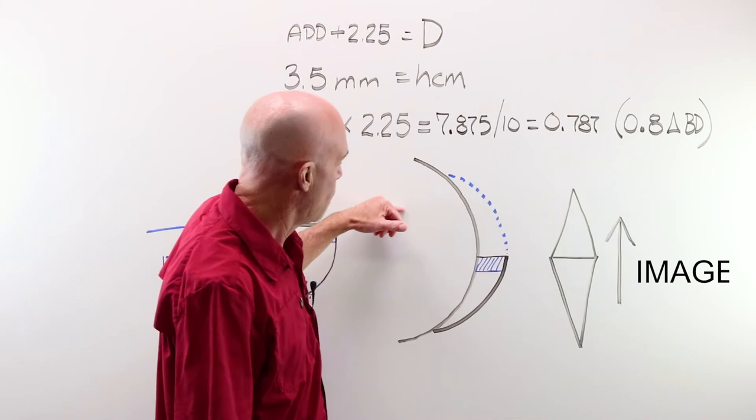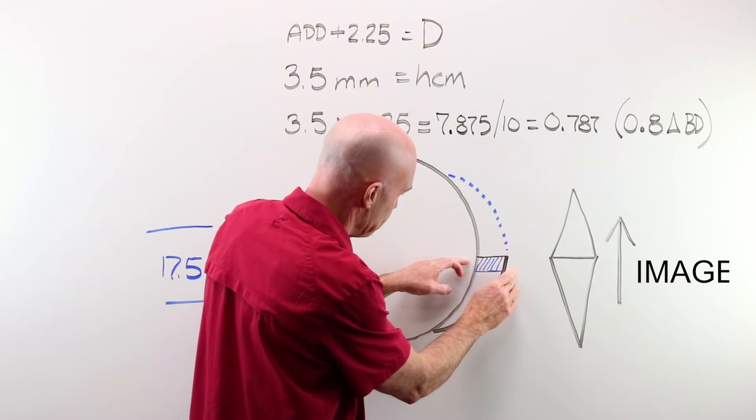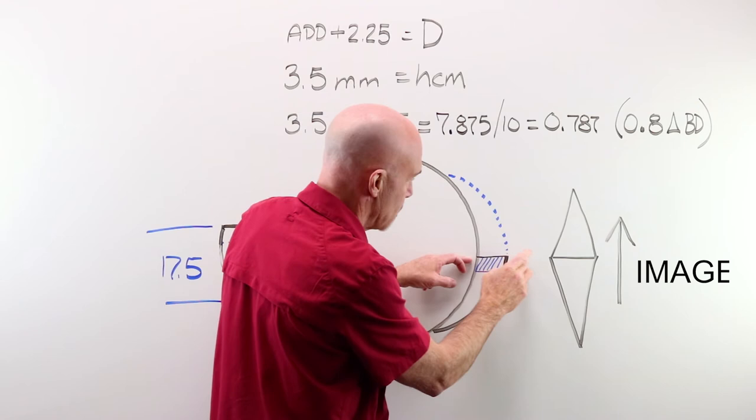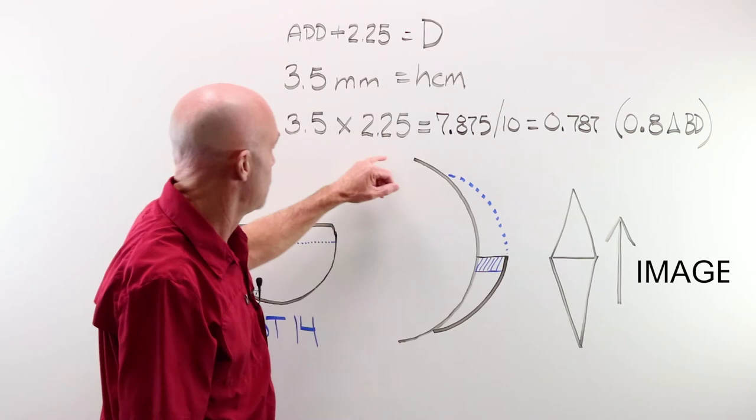But because we are above that, we have that little extra piece, the formula, or the concept, whatever you want to call it, for image jump, assumes that we're actually looking through this little portion, this part that's above the line, the OC line, which separates the two prism shapes, so that we're actually looking through this portion, so we are receiving base-down prism. That's where that comes from.